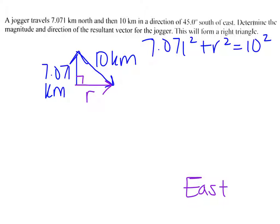I'm just going to show you how to do it step by step. So when you square 7.071, that is going to give you 49.999 plus r squared, and then 10 squared would be 100. You would then subtract that 49 from both sides, leaving you with just r squared on the left.